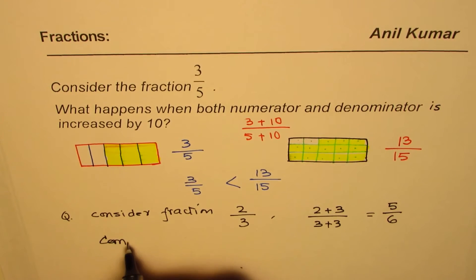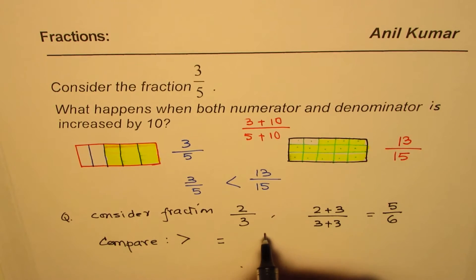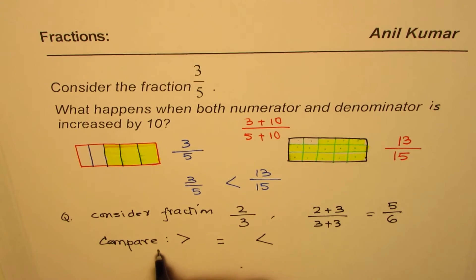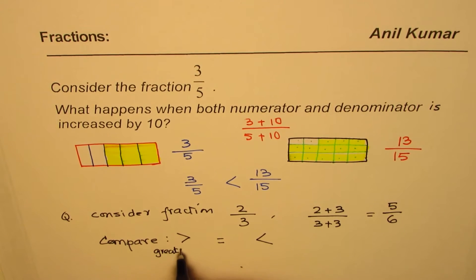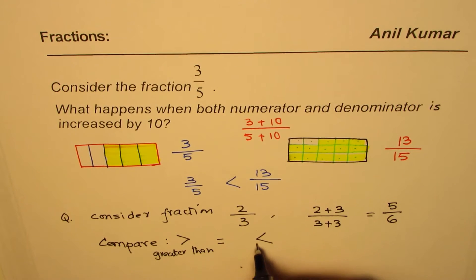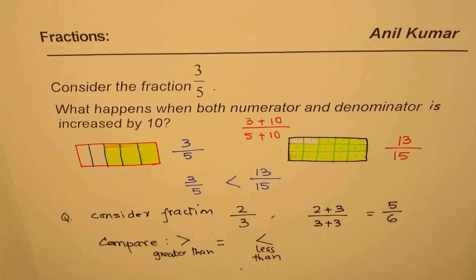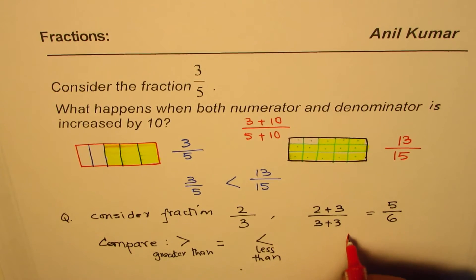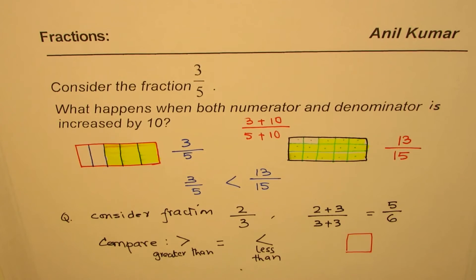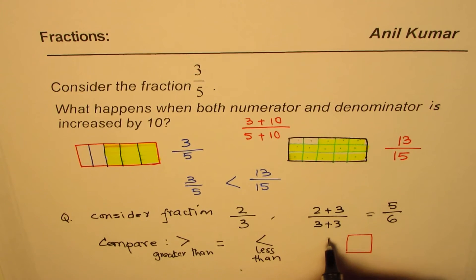So compare, so use the symbols like greater than, this is greater than, equal to, or less than. So this is called greater than. This, you know, is equal to, and this is less than. So what you have to do here is, you have to write the symbol in between and figure out which one is greater.